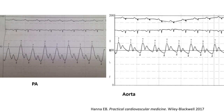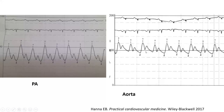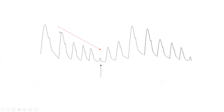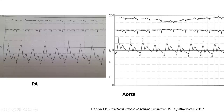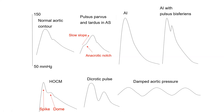Summary of aortic waveform morphologies: normal contour; anacrotic notch with slow upslope for severe AS; spike-and-dome with sharp upslope for HOCM; loss of dicrotic notch for AI; pulses bisferiens (two systolic peaks) for AI; dicrotic pulse (systolic peak plus diastolic peak) for severe heart failure; pulsus alternans for severe heart failure; and damp pressure waveform for poor measurement. These are the key distinctive patterns.